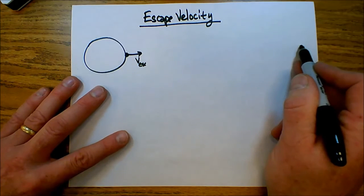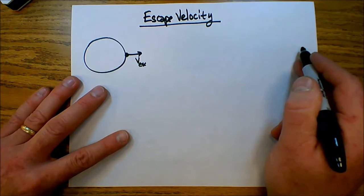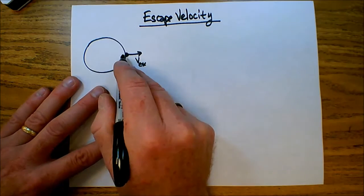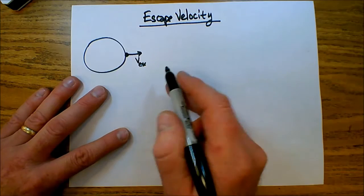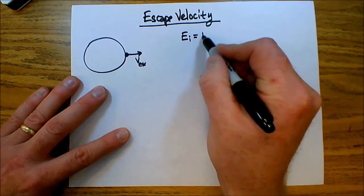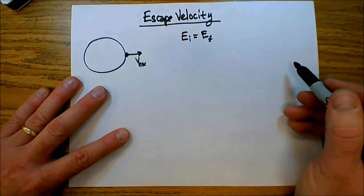it will be able to get out here infinitely far away with zero kinetic energy and zero gravitational energy. Then it will not ever fall back down. So to find an expression for the escape velocity, what we do is we do energy initial equals energy final. It's just a conservation of energy problem.